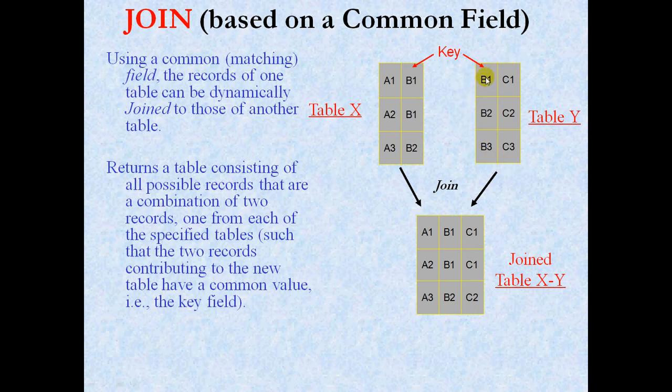In this other table, the additional information shows that B1, which matches with B1 in the other table, also has a characteristic of C1. It's very generic: B2 has C2 and B3 has C3.